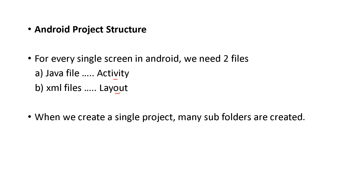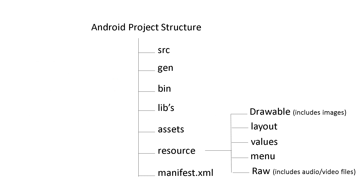When we create a single project, many subfolders are created. This is the Android project structure: SRC, gen, bin, lib, assets, resources, and an important file — manifest.xml.